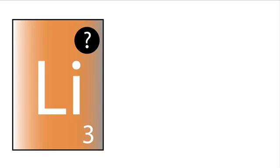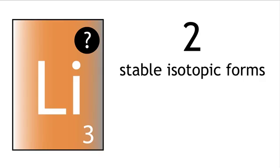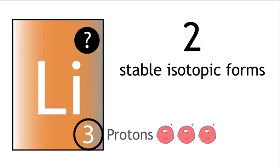Another example of an isotope is lithium. Lithium has two stable isotopic forms. The atomic number of lithium is three. Therefore, it has three protons.